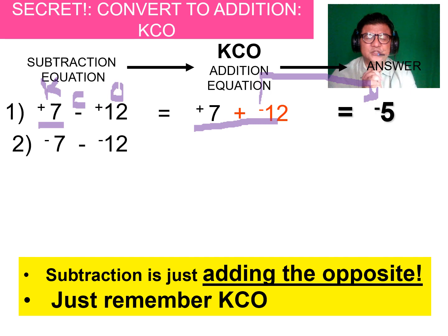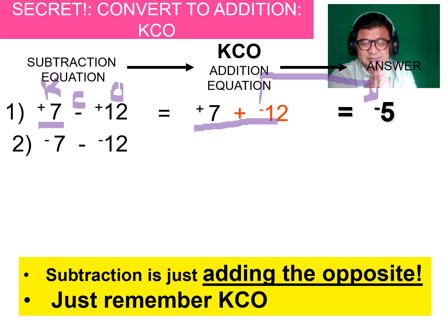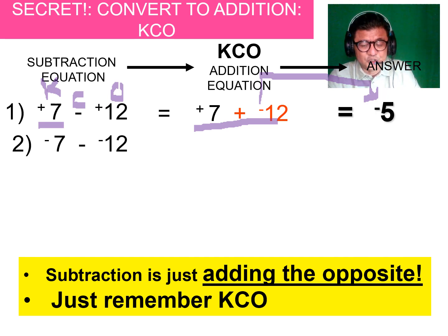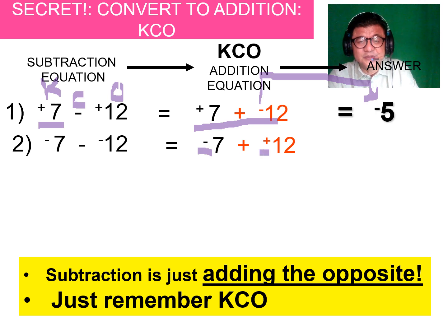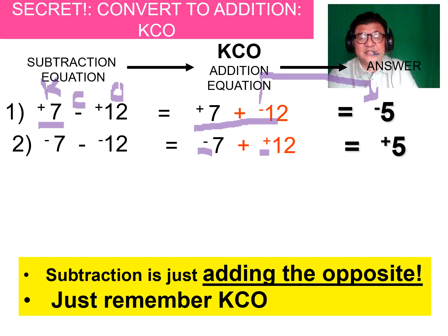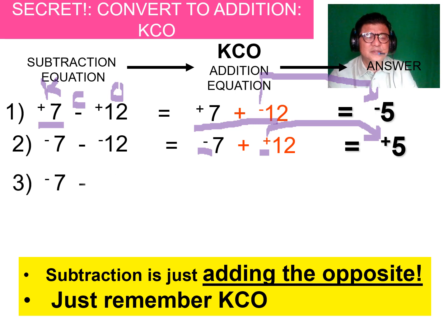How about this one — try it first and write your answer in the chat. KCO: keep, change, opposite. Rewrite it as negative 7 plus 12. Adding two different signs — subtract them, you get 5. The greater absolute value is positive 12, so the answer is positive 5. Good job!